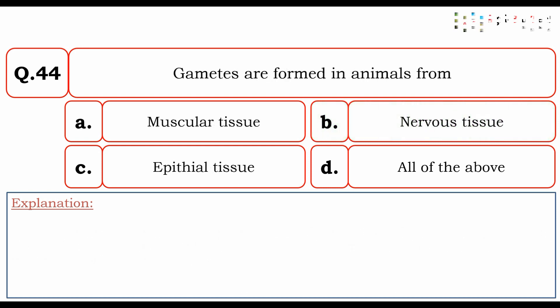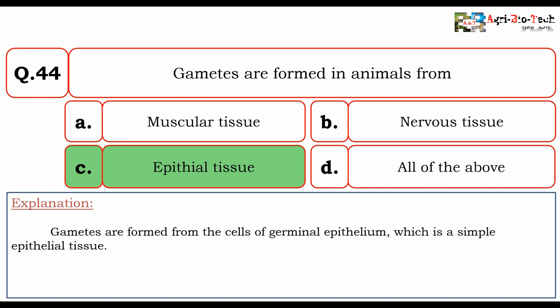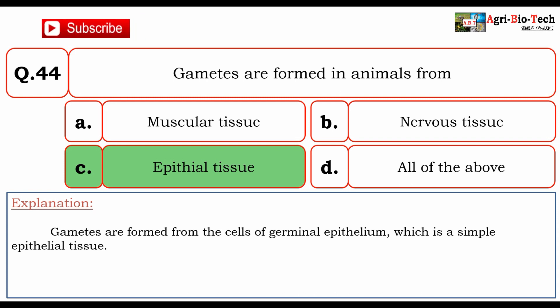Next question: gametes are formed in animals from — A) muscular tissue, B) nervous tissue, C) epithelial tissue, or D) all of the above. The correct option is C) epithelial tissue. Gametes are formed from the cells of the germinal epithelium, which is a simple epithelial tissue.